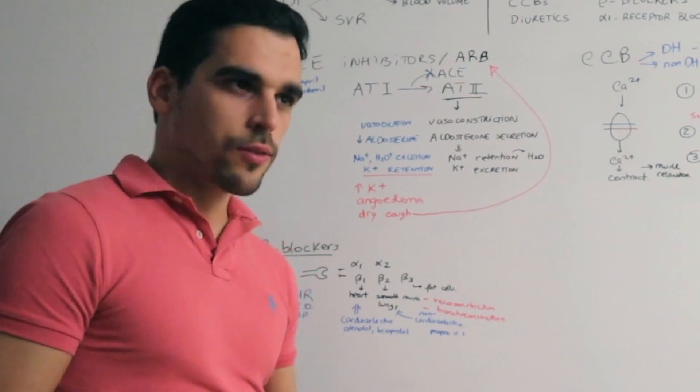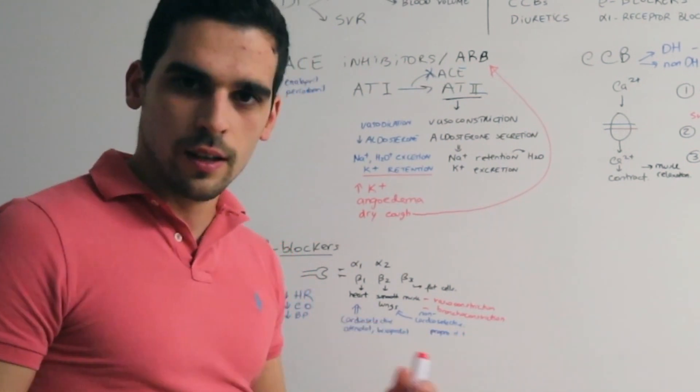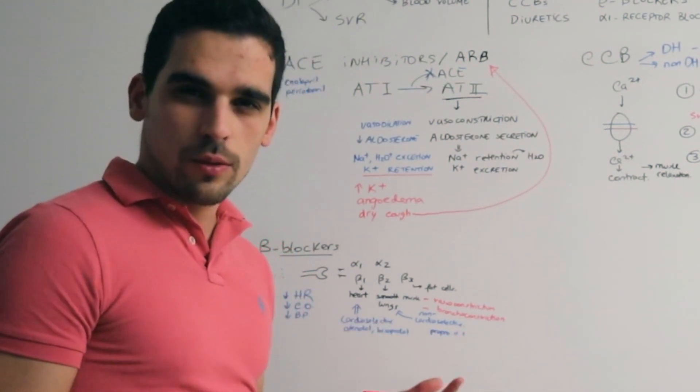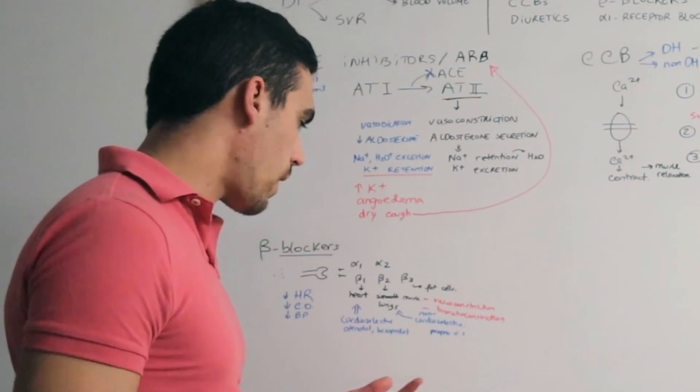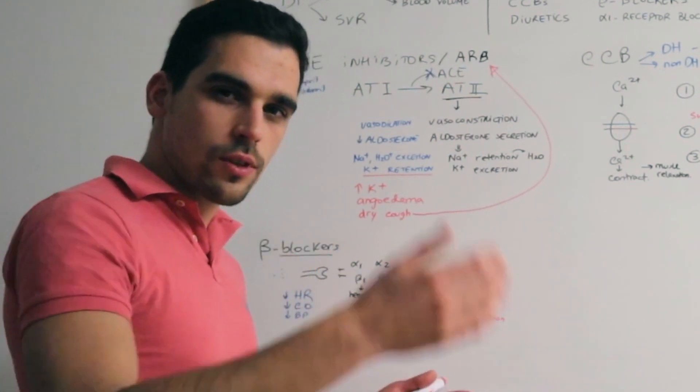For example, if we have a patient with anxiety, then propranolol is quite good because it can reduce the heart rate and the tremors all over the body.